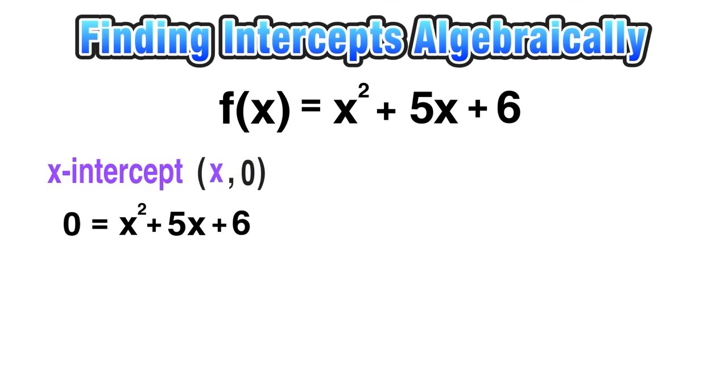Remember that the y-coordinate is always zero, so I'm going to replace y with zero and then solve for x. Now notice that this is a quadratic function—it is zero being equal to a trinomial.